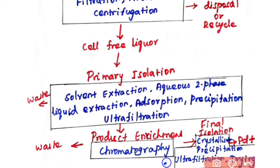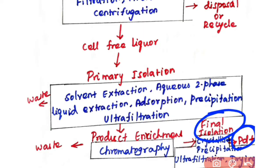The next step is final isolation. In final isolation, ultrafiltration is used for liquid products and drying for solid products. After ultrafiltration you proceed to crystallization, followed by centrifugation or filtration to purify your product. After final isolation you obtain your purified product and proceed to packaging.